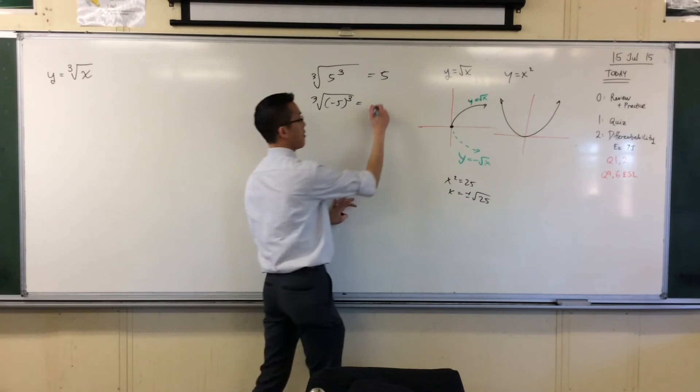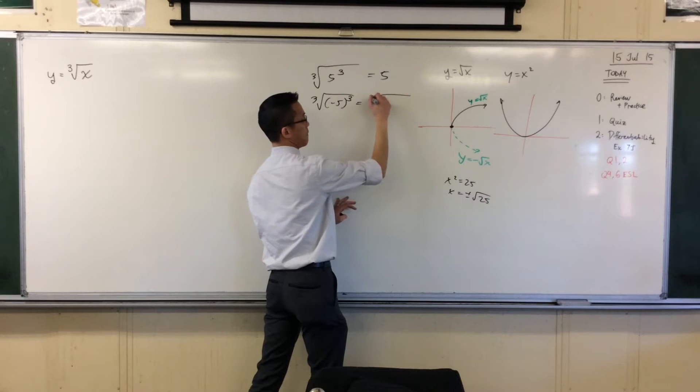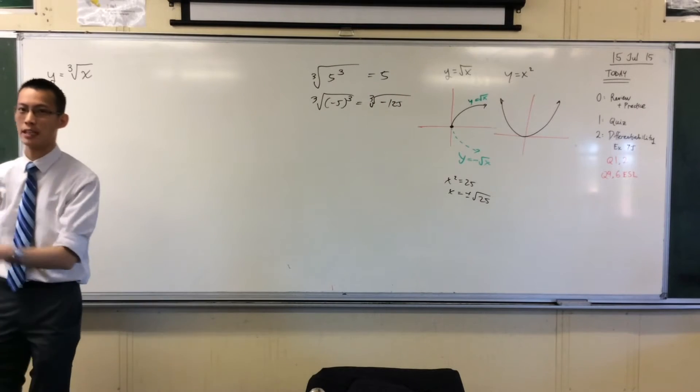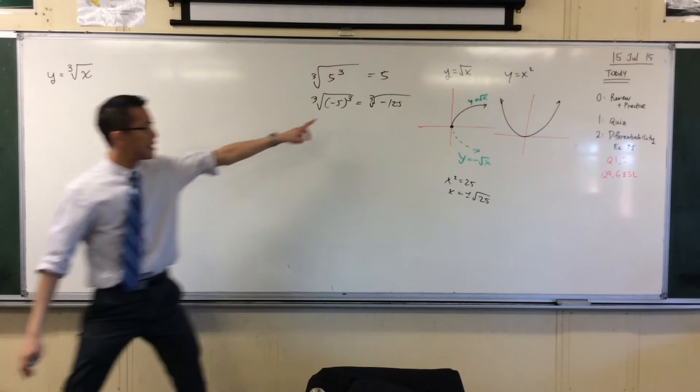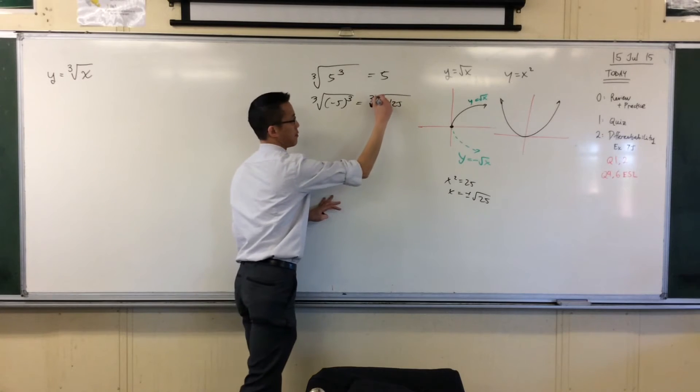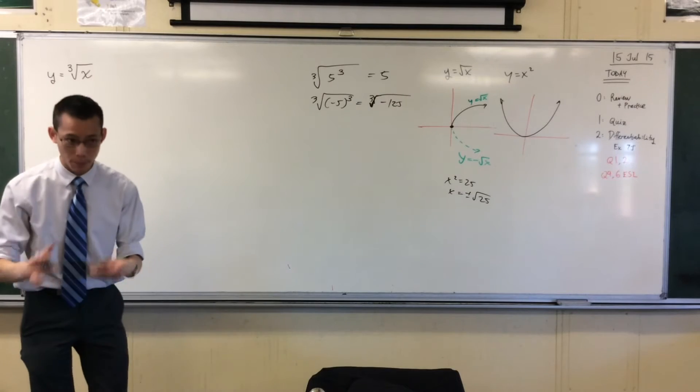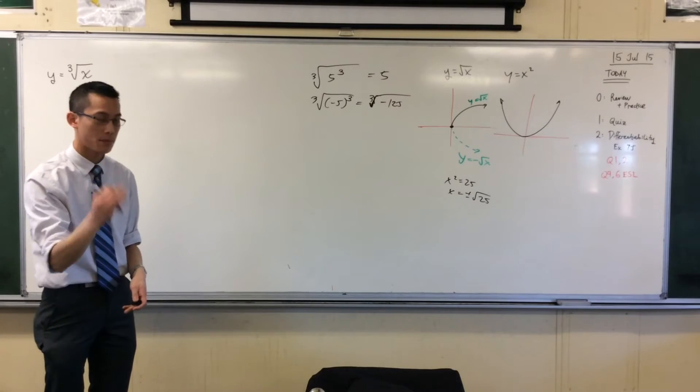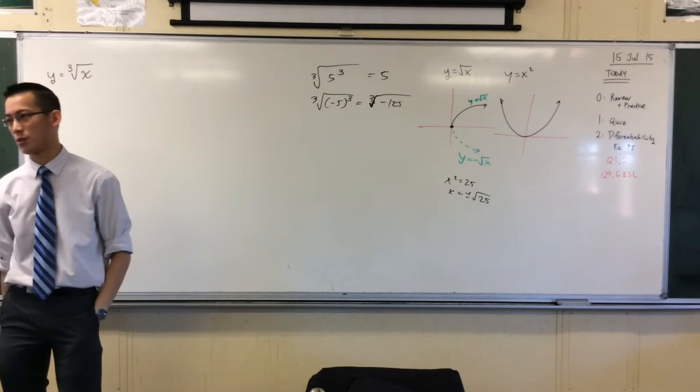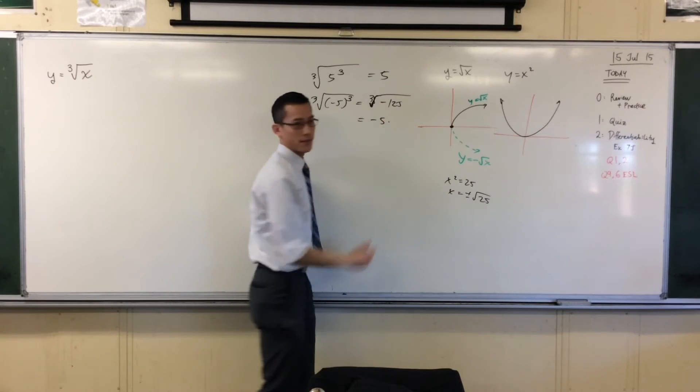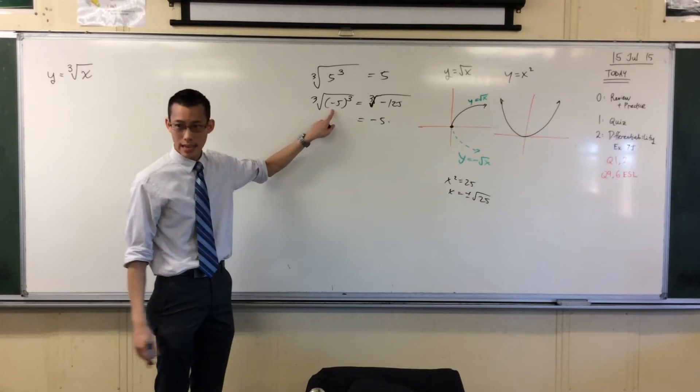So, this in here is minus 5 times minus 5 times minus 5, which is minus 125. There are three negatives in there, right? So two of them cancel, leave one behind. Once I clean up my radical side, what's the number that if you multiply it by itself three times will give you negative 125? Negative 5. You do get back the same shape or the same number.